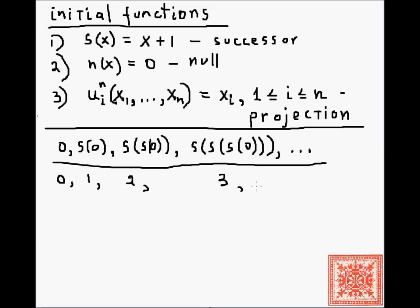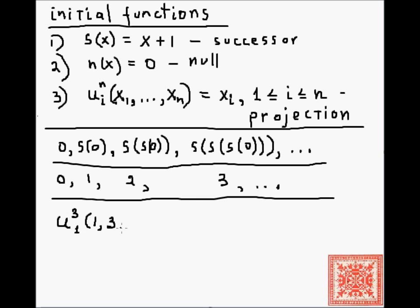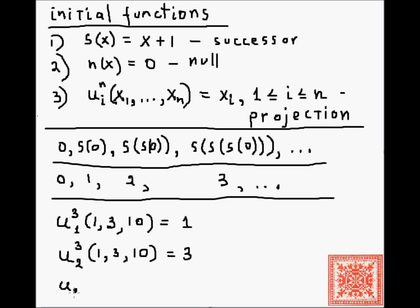A couple of examples of the projection function: U_1^3(1, 3, 10) equals 1. U_2^3(1, 3, 10) equals 3. And U_3^3(1, 3, 10) equals 10.